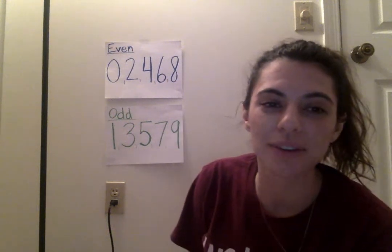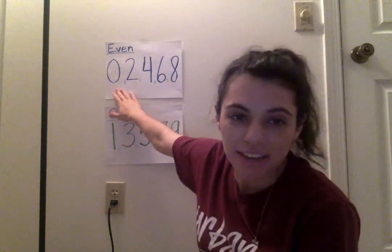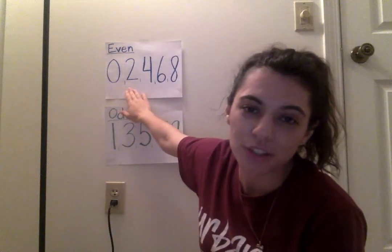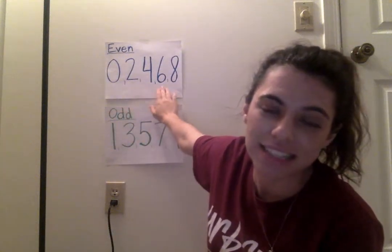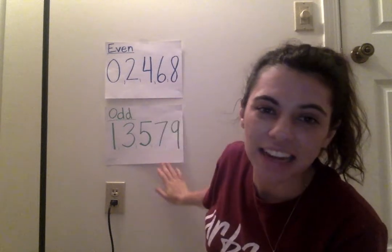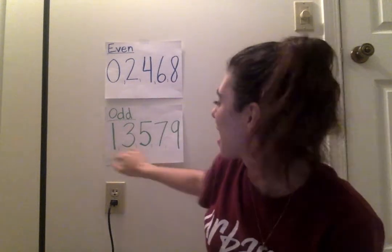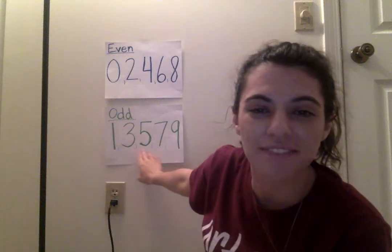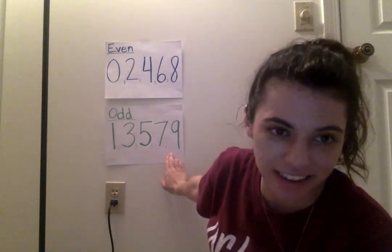If you can remember from when we were in class, the even numbers are 0, 2, 4, 6, 8. And come down here to the odd — the odd numbers are 1, 3, 5, 7, and 9.